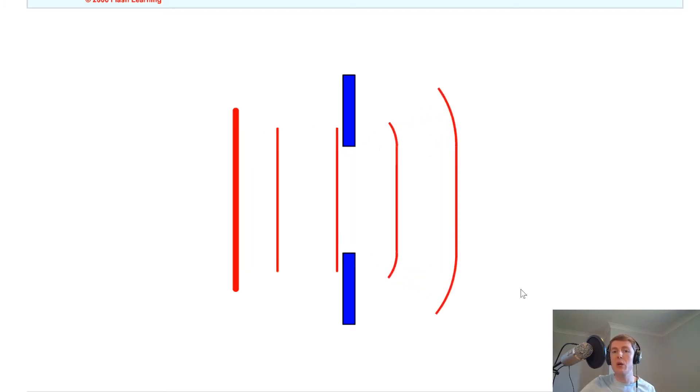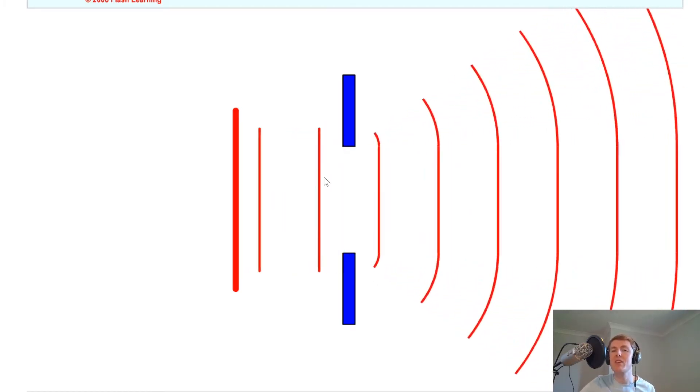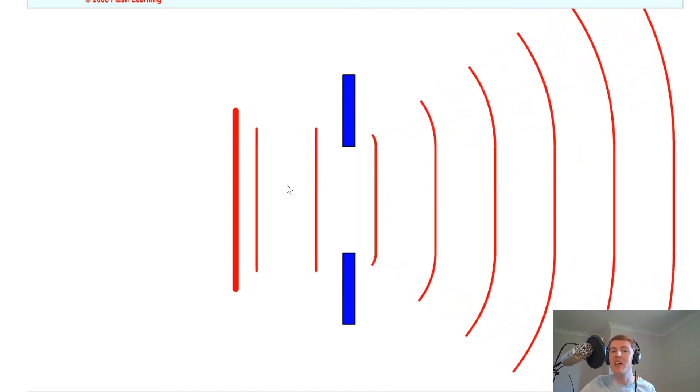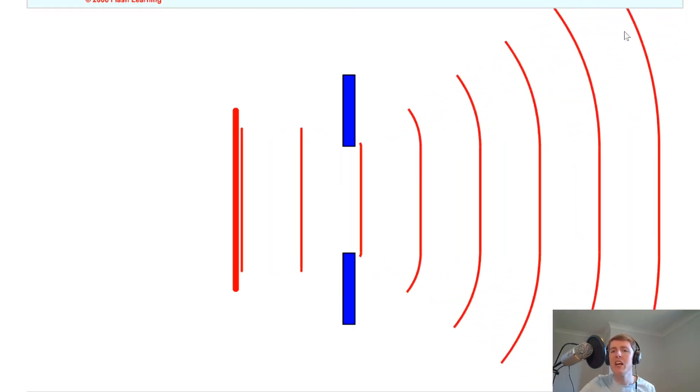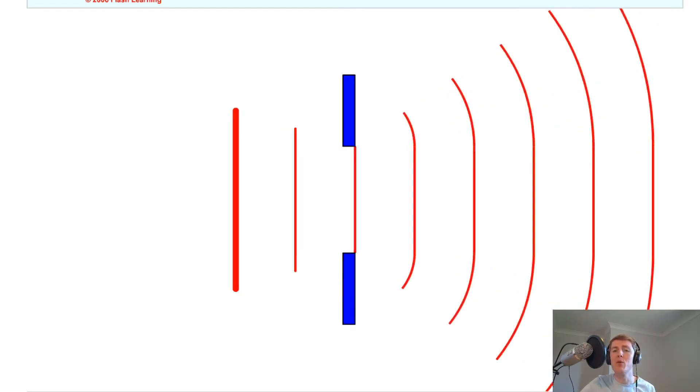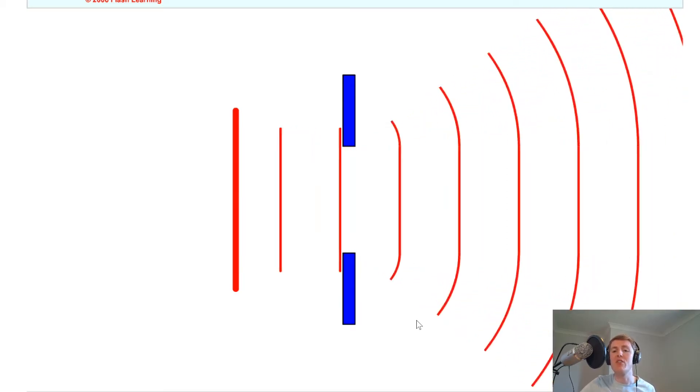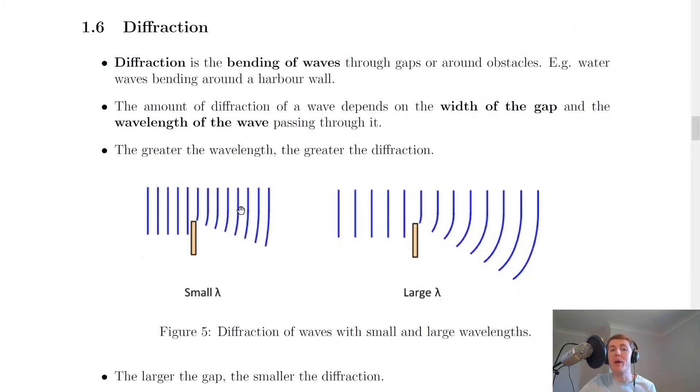So you'll see now that as the waves pass through the gap, remember these waves have a bigger wavelength than before, a bigger distance between them. So you'll notice that there's now more bending at the ends. So as they reach the end over here, there's a lot more bending than before. And that is because of a general rule. The general rule is that the greater the wavelength of a wave, the greater the diffraction. So the greater the amount of bending.